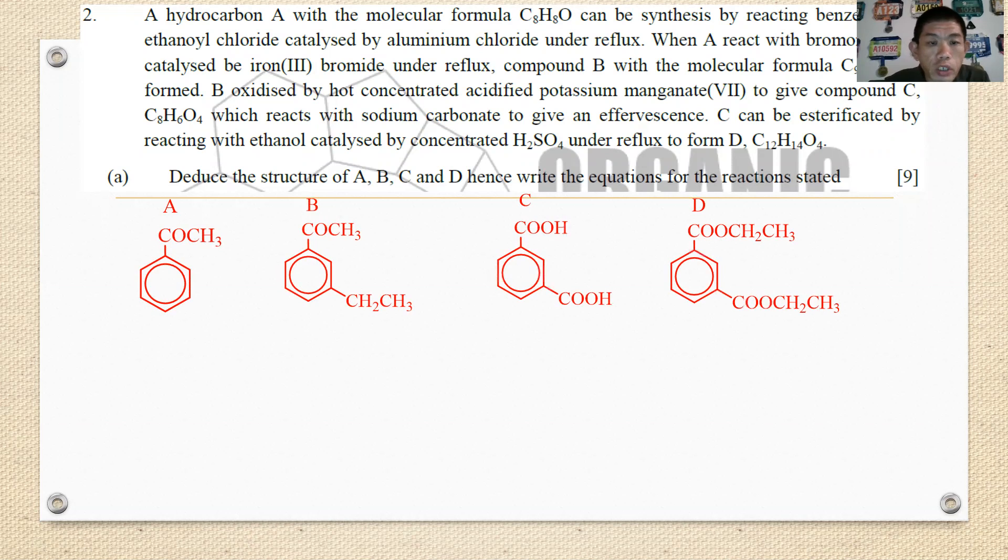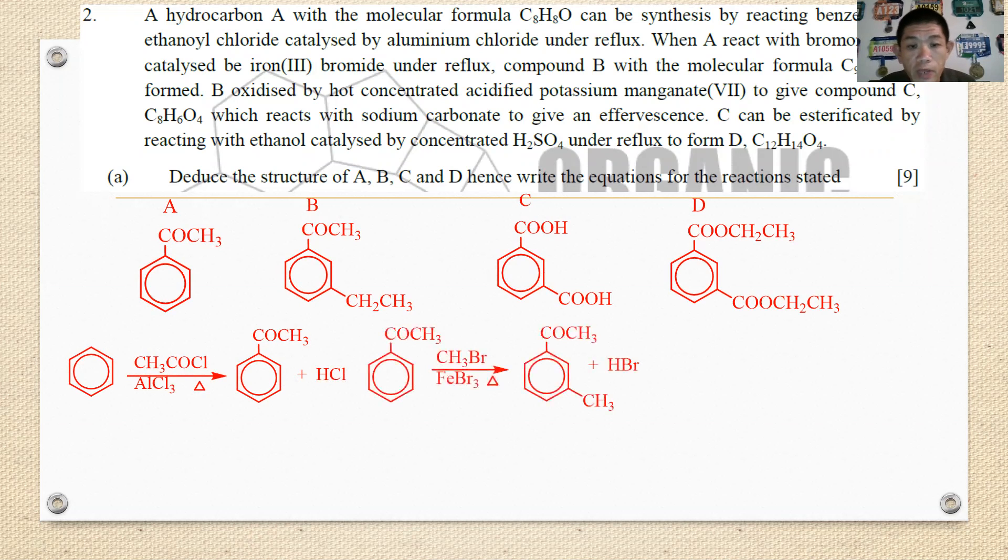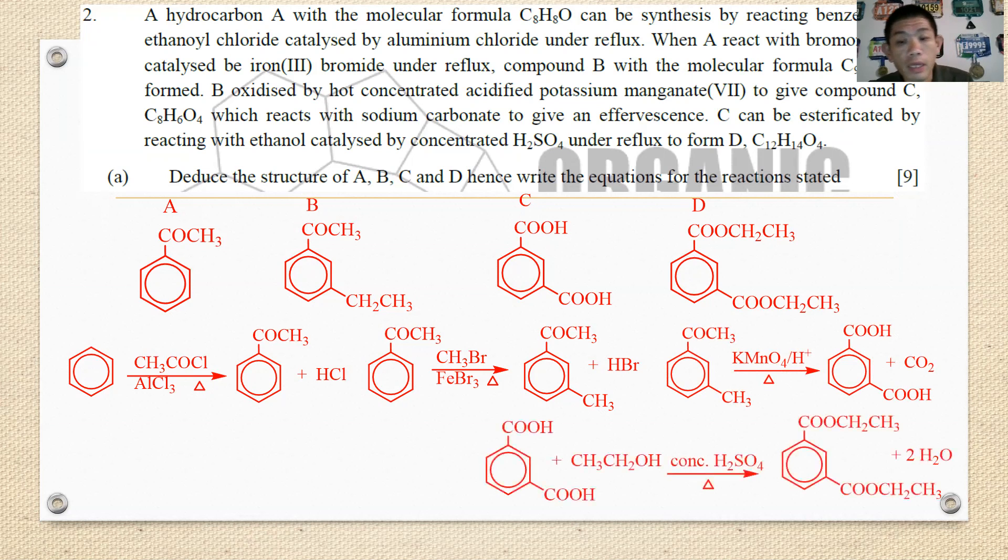As for the equation part, you have to write out the five equations as I highlighted. So first benzene reacts with CH3COCl in AlCl3 to form acetophenone, then the acetophenone reacts with CH3Br plus FeBr3 to form the methyl acetophenone. When it undergoes oxidation you form dibenzoic acid, and then you also react with sodium carbonate to form salt plus carbon dioxide plus water, and finally the esterification. So here you go, all the nine marks for this part 2a.